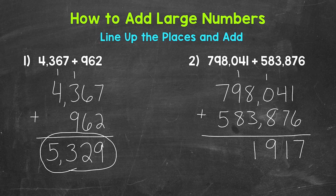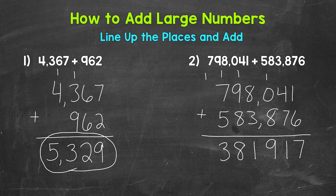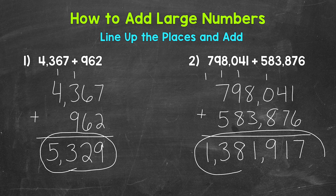Now we move to the ten thousands place, where we have one plus nine plus eight. One plus nine is ten, plus eight is 18. So put the eight in the ten thousands place and carry the one to the hundred thousands place. Then we move to the hundred thousands place, where we have one plus seven plus five. One plus seven is eight, plus five is 13. So put the three in the hundred thousands place and carry the one to the millions place — we bring that one straight down since there isn't anything else in the millions place. We place the commas in our final answer and end up with 1,381,917.